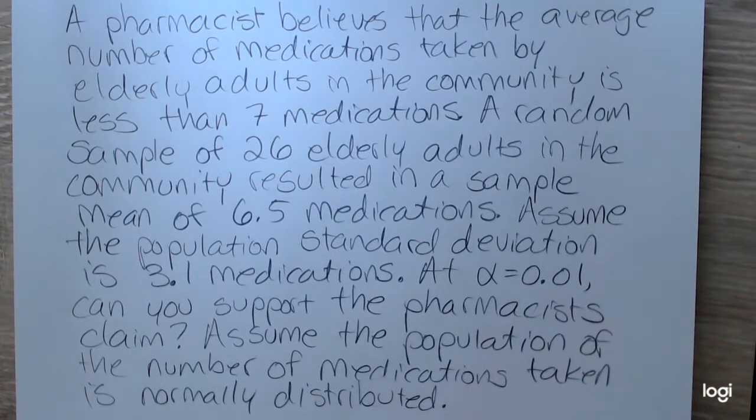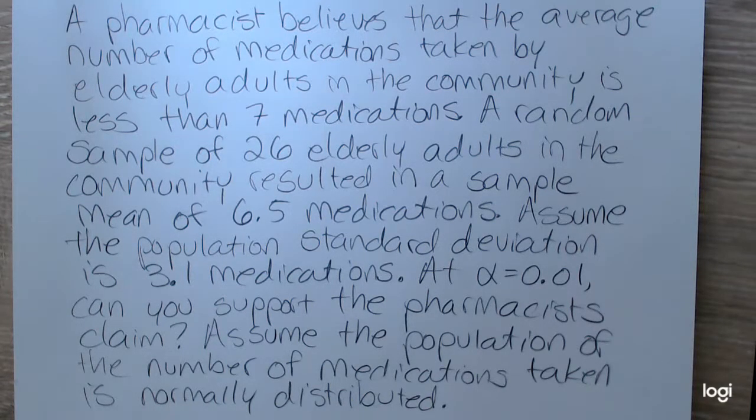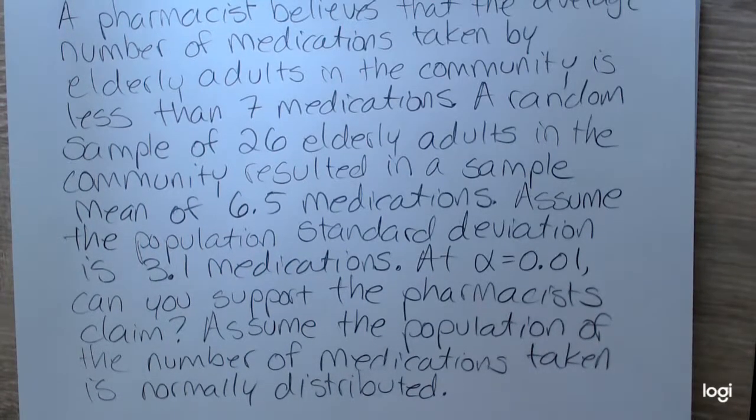Here's the problem. It's a mouthful. A pharmacist believes that the average number of medications taken by elderly adults in the community is less than seven medications. A random sample of 26 elderly adults in the community resulted in a sample mean of 6.5 medications. Assume the population standard deviation is 3.1 medications. At alpha equal 0.01, can you support the pharmacist claim? Assume the population of the number of medications taken is normally distributed.